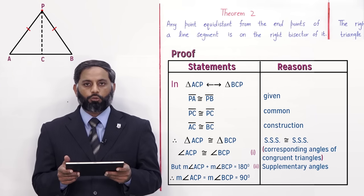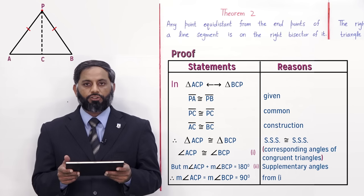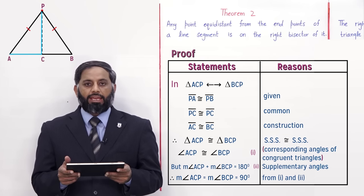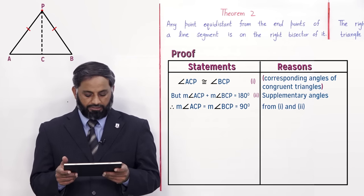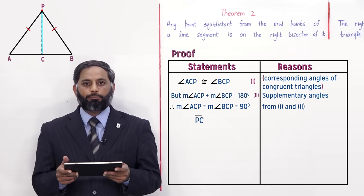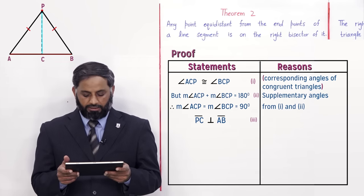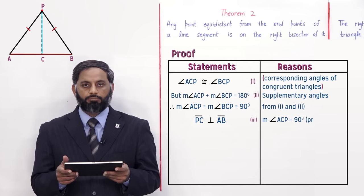This is only possible when both angles are equal to 90 degrees. Measurement of angle ACP is equal to measurement of angle BCP is equal to 90 degrees — reason: from equation 1 and 2. Since we have shown angle ACP and angle BCP are equal to 90 degrees, this proves that PC is perpendicular to line segment AB — equation 3, reason: measurement of angle ACP equals 90 degrees proved.